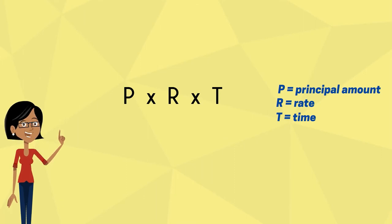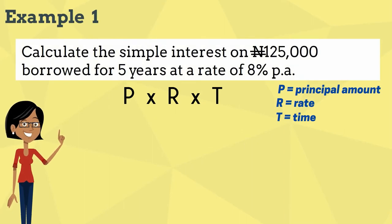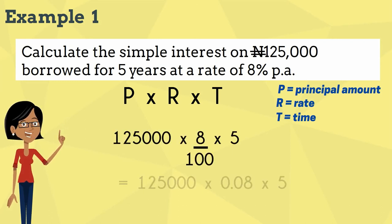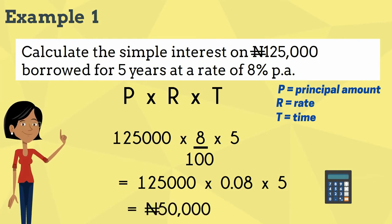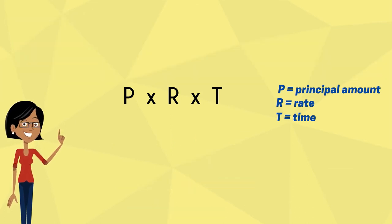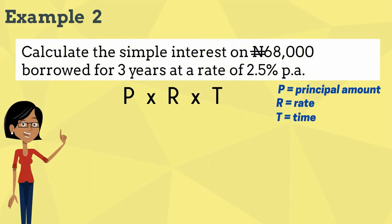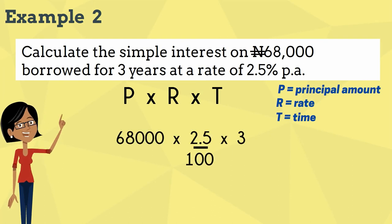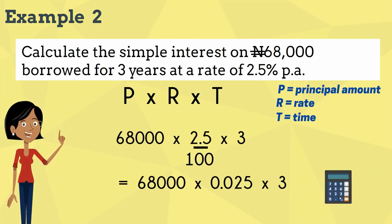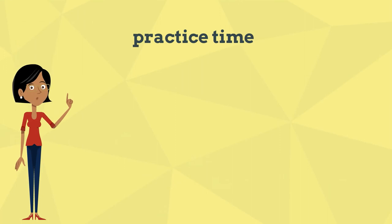Now let's look at some examples using the formula P times R times T. Here's another example. Well done — I'm sure you can calculate simple interest now using the formula P times R times T.